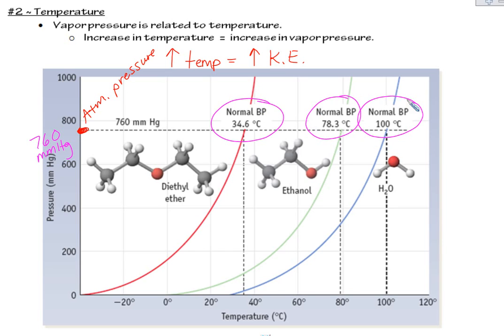it's got the normal boiling points marked in for these three liquids. Water boils at about 100, ethanol boils at about 78, and this ether boils at about 35 degrees. So again, as I hit that standard atmospheric pressure, the temperature at that point is considered our normal boiling point.